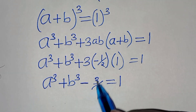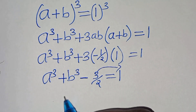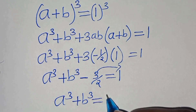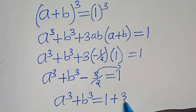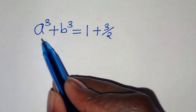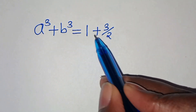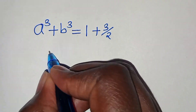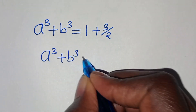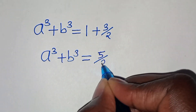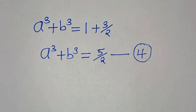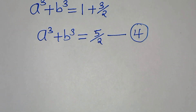Taking minus three over two to the right hand side, we have a cubed plus b cubed equals one plus three over two. So a cubed plus b cubed equals five over two. Let's call this equation four.